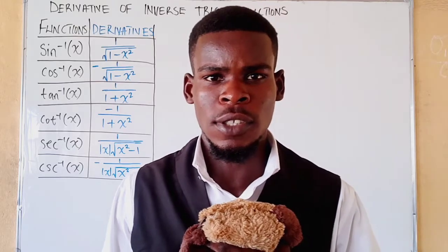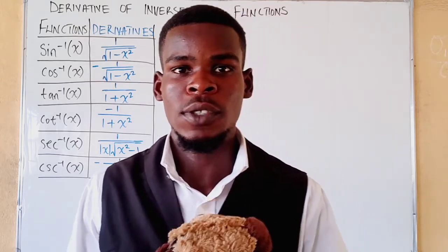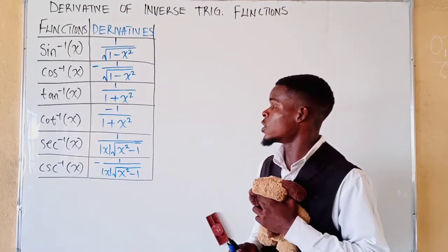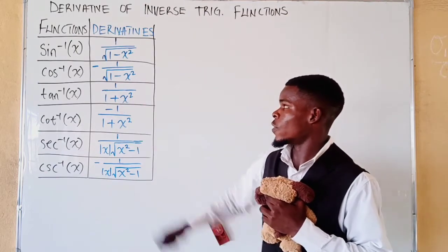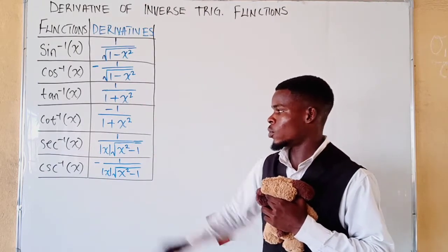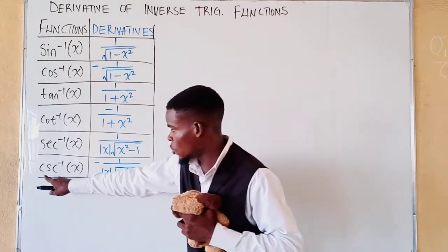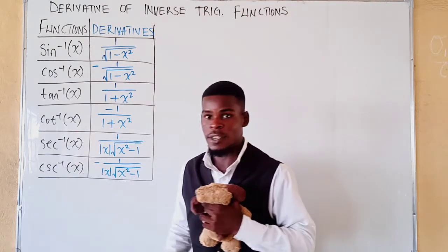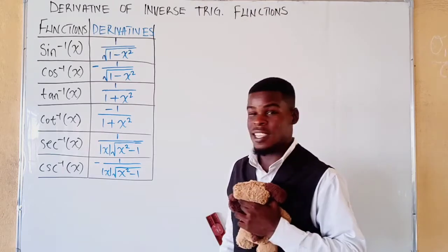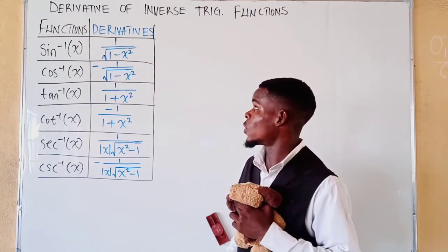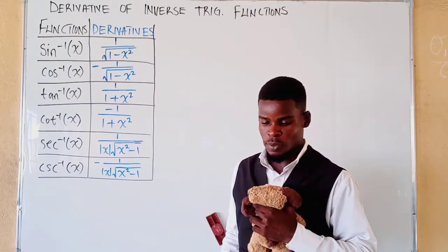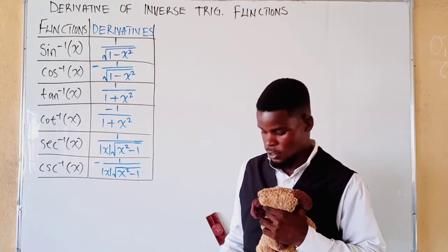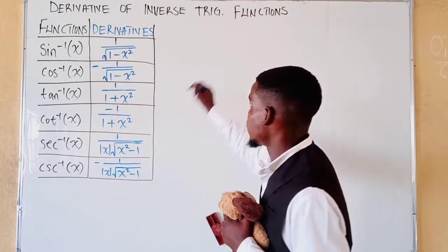Now let's learn how to find the derivative of inverse trigonometric functions. We have sine inverse of x, cosine inverse of x, all the way to cosecant inverse of x. These are the familiar trig functions — cosecant, sine, cosine — and we take the inverse of each, so we call them inverse trigonometric functions.